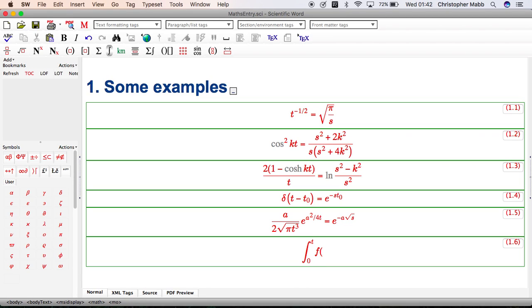F of tau from the Greek letters, g of t minus tau. Tau again from the Greek letters. d tau equals capital F of s.